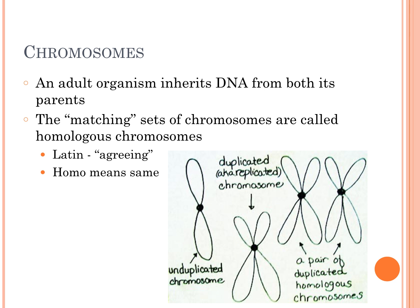An adult organism inherits DNA from both its parents — you got half your DNA from mom and half from dad. The matching sets of chromosomes you get from each parent are called homologous chromosomes. Remember, the root word 'homo' means the same.